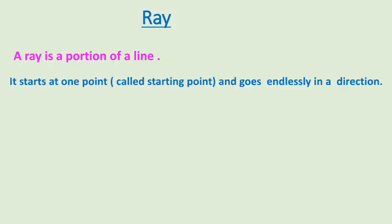A ray is a portion of a line. The point where the ray starts is called the starting point. As you can see in the figure, we have a portion of a line, and this portion of a line goes endlessly in one direction.